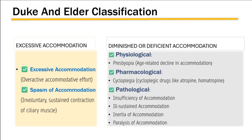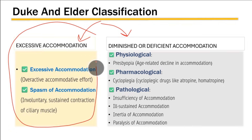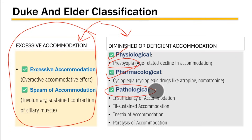Duke and Elder basically classified accommodation anomalies into two broad categories: anomalies arising because of excessive accommodation, and anomalies arising because of diminished or deficient accommodation. On one side you have excessive accommodation and spasm of accommodation, and on the other side we have physiological diminution of accommodation which is seen in presbyopia, pharmacological decrease in accommodation which is seen when we take cycloplegic drugs like atropine or homatropine resulting in cycloplegia.